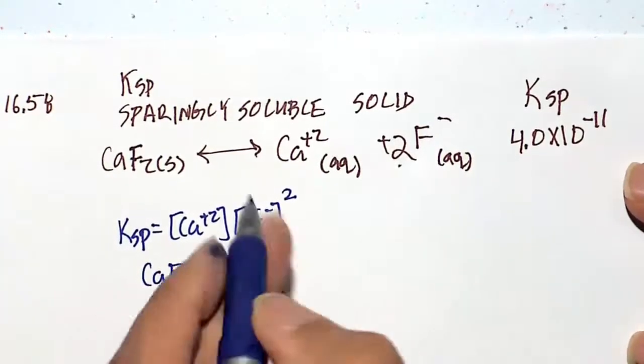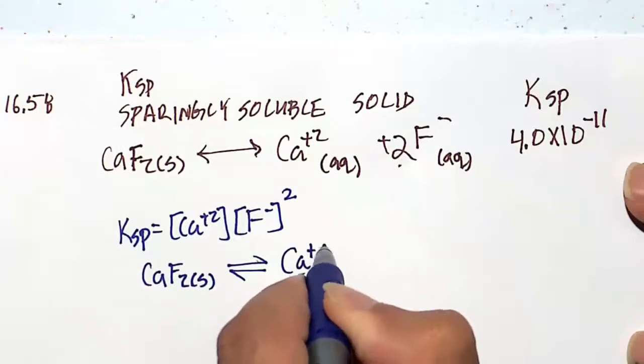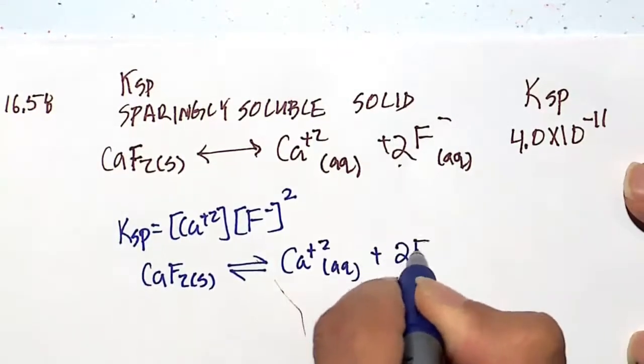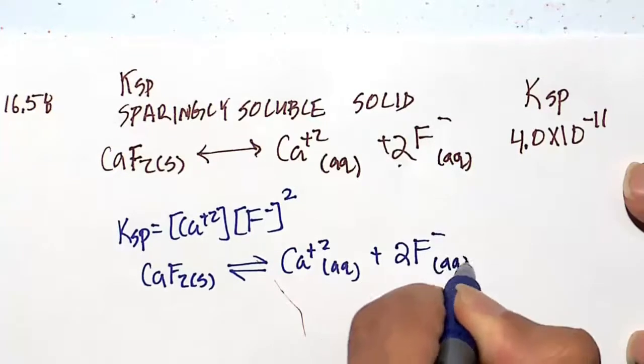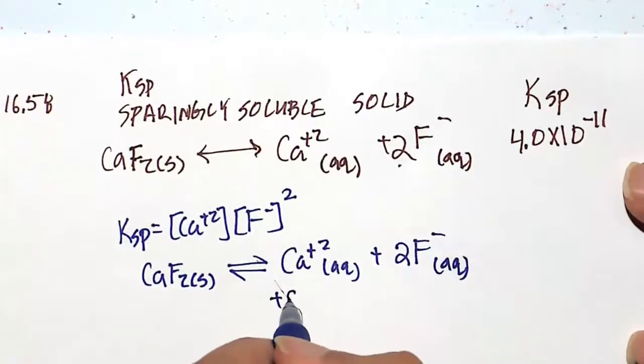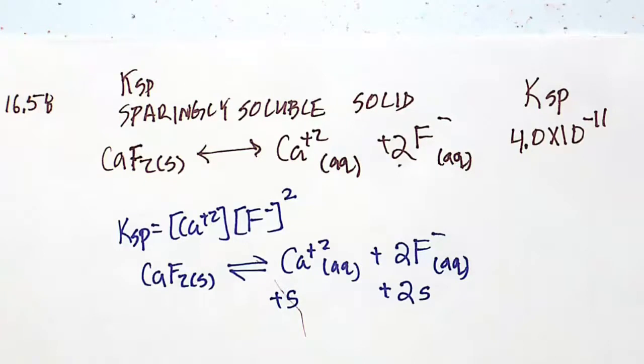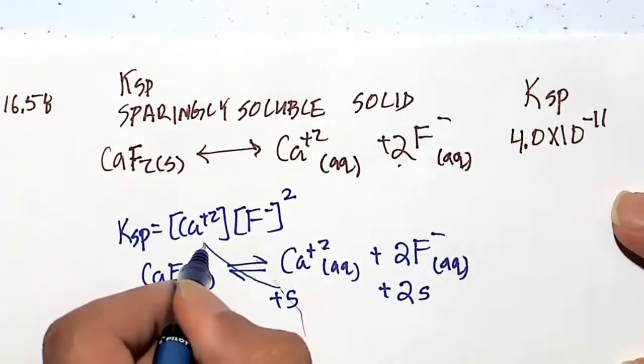Let's just rewrite this equilibrium again. This time, we're going to do our ice table. The ice table, instead of x, we're going to use s for solubility and 2s for the fluoride ion, its solubility. The 2s comes from the fact that we have 2 moles of the fluoride ion.